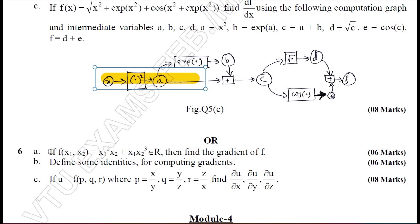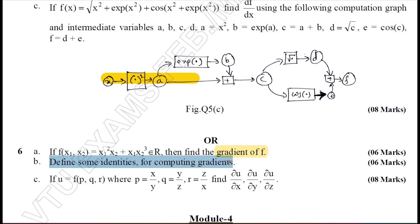Moving on to Question 6A: given f, find the gradient of f. Question 6B is on definitions — you are required to define identities of vectors, specifically identities related to computing gradients. Question 6C: given a composite function, you are required to find ∂u/∂x, ∂u/∂y, and ∂u/∂z.